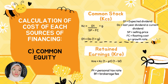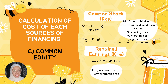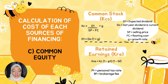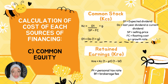Lastly is common equity. Common equity has two calculations: common stock (KCS) and retained earnings (KRE). The calculation for KCS is: KCS = [D1 / (SP − FC)] + G. D1 = D0 × (1 + G). D1 is expected dividend, D0 is last year's dividend, SP is selling price, FC is floating cost, and G is growth rate. The calculation for KRE is: KRE = KCS × (1 − PT) × (1 − BF). PT is personal tax rate and BF is brokerage fee.